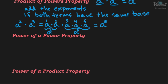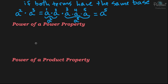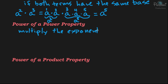Now the next property: the power of a power property. To find the power of a power, you multiply the exponents. So if you have a squared and you want to raise that whole thing to the fourth power, all you have to do is multiply the two exponents. Two times four would be eight, so the answer is a to the eighth power.